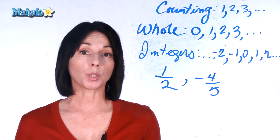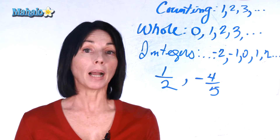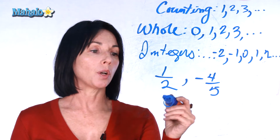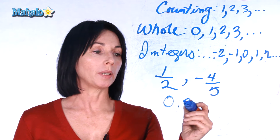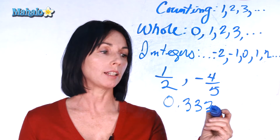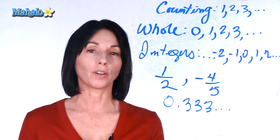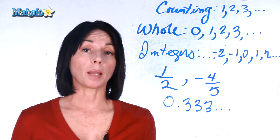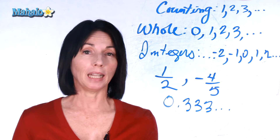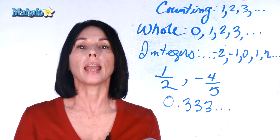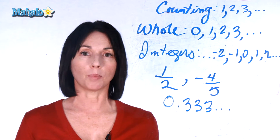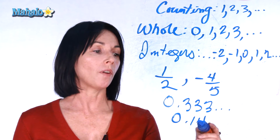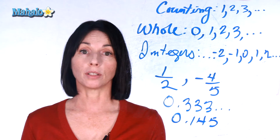Rational numbers, when you see them in decimal form, might be repeating. So something like zero point three, three, three, and that just goes on forever — that's also a rational number. They also sometimes have terminating decimal representations, meaning they have a finite number of places. So zero point one, four, five — that's also a rational number.